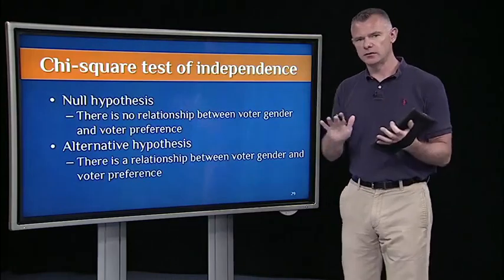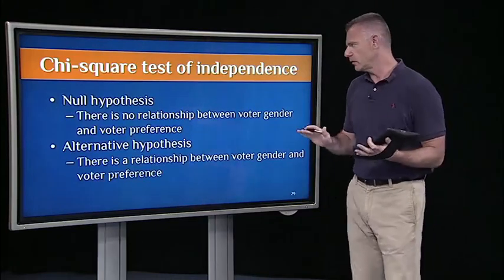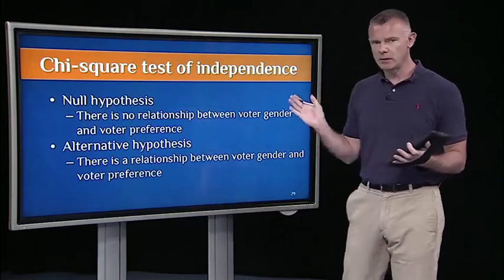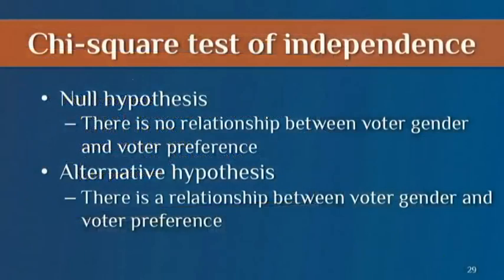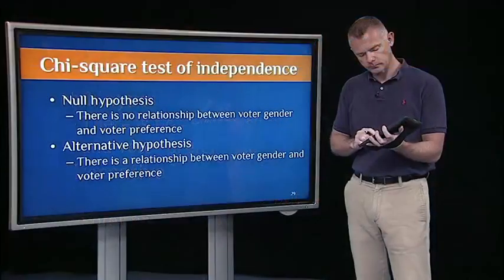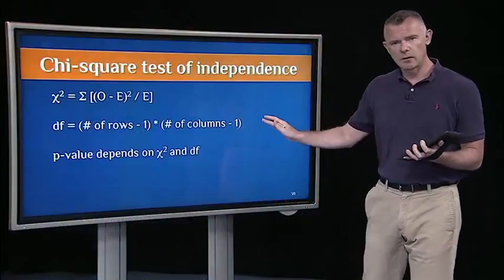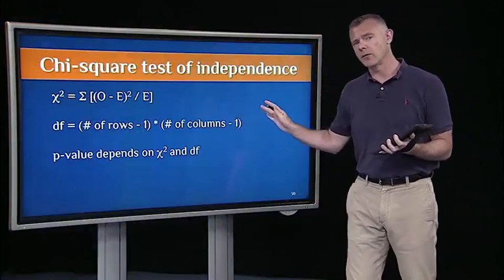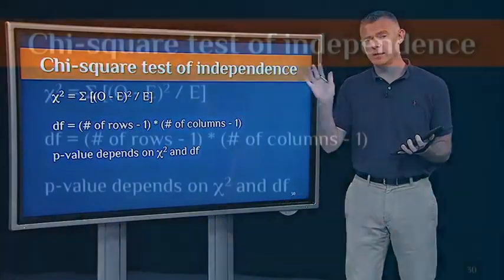The null hypothesis is that there's no relationship between voter gender and voter preference. The alternative hypothesis is that there is a relationship — there's a contingency. The chi-square formula is exactly the same as the chi-square formula we saw in the last segment for goodness of fit.